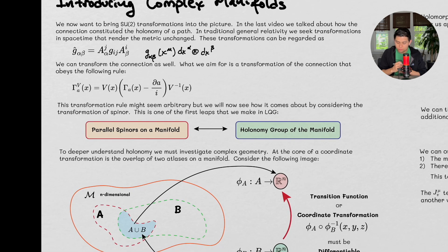We can transform the connection as well, and what we aim for is a transformation of the connection that obeys the following rule. And you might think, okay, this is a little bit arbitrary, but we'll see, we're going to come back to this, I'm sort of giving you the punchline first, and then we're going to go through a bunch of topics on complex manifolds, and then we'll revisit this.